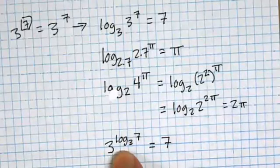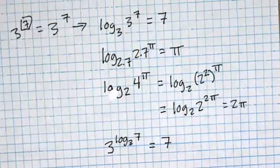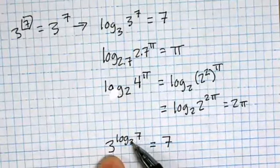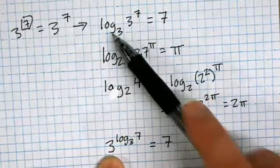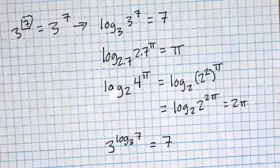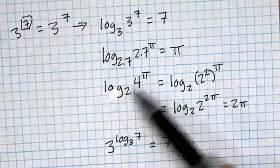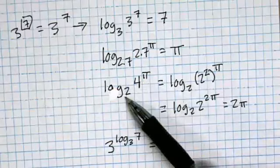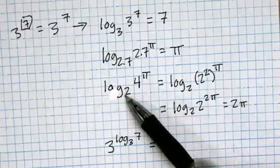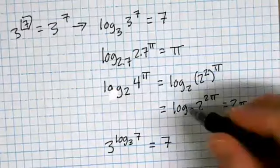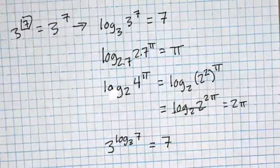So this is a canceling property of logs. If you have exponentials and logs within each other — whether a log inside an exponential or an exponential inside a log — as long as the bases match, they cancel. Sometimes you have to be clever about manipulating them to make the bases match, like rewriting 4 as 2 squared to get matching bases.